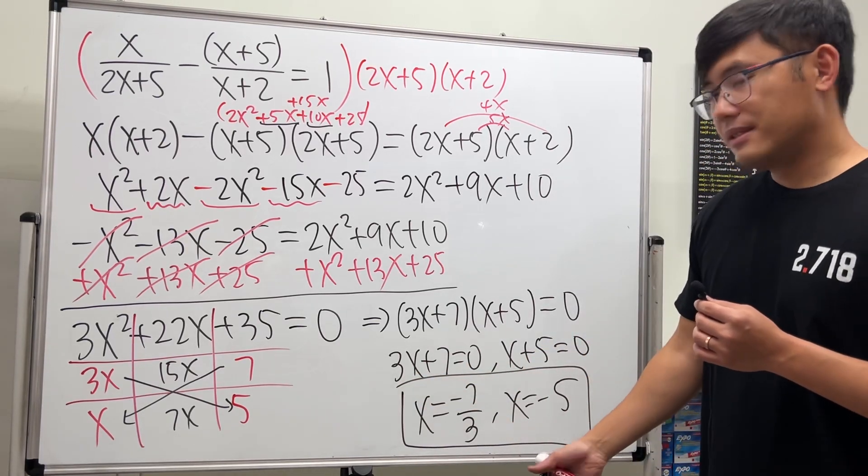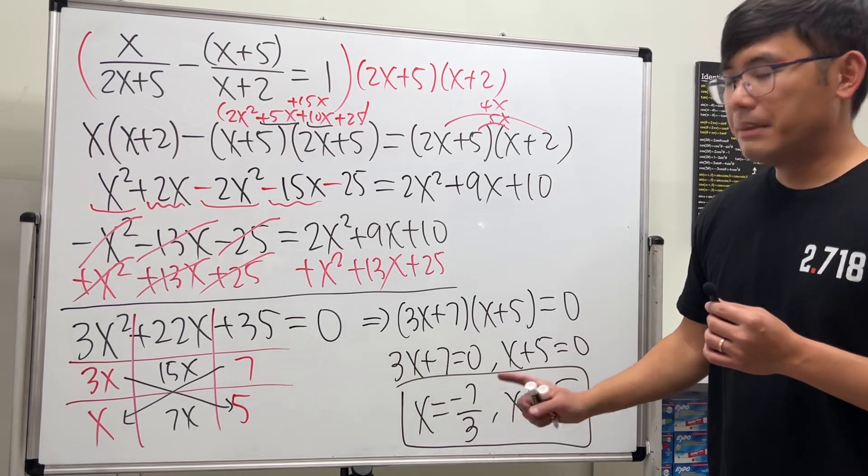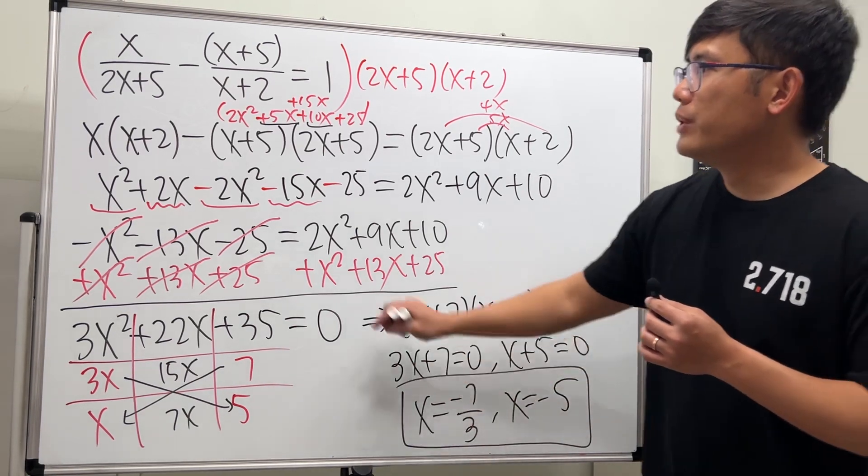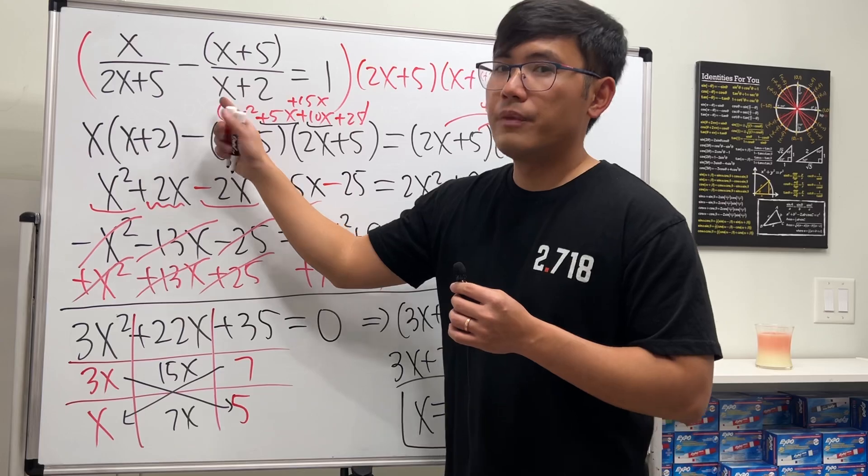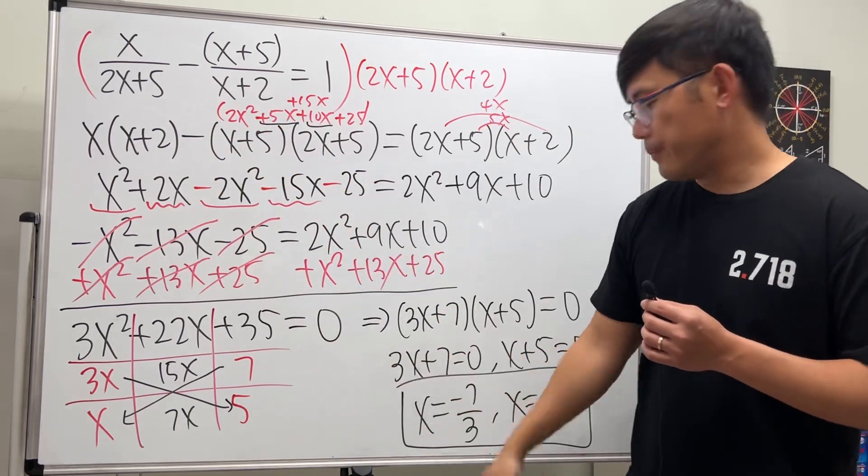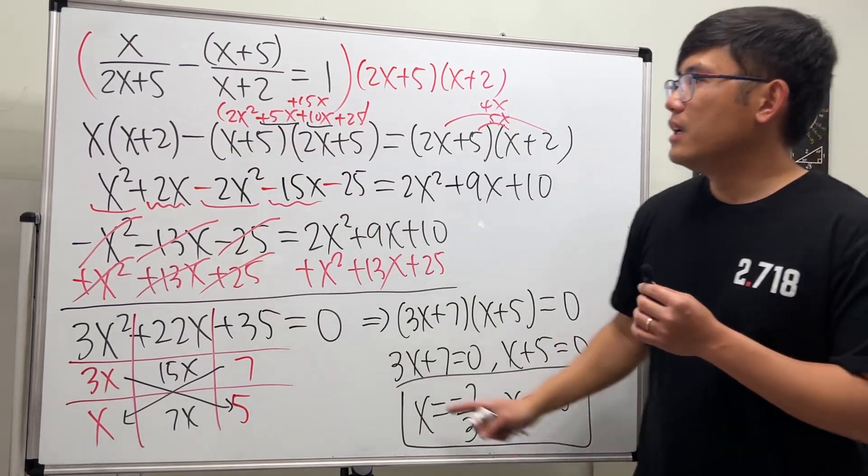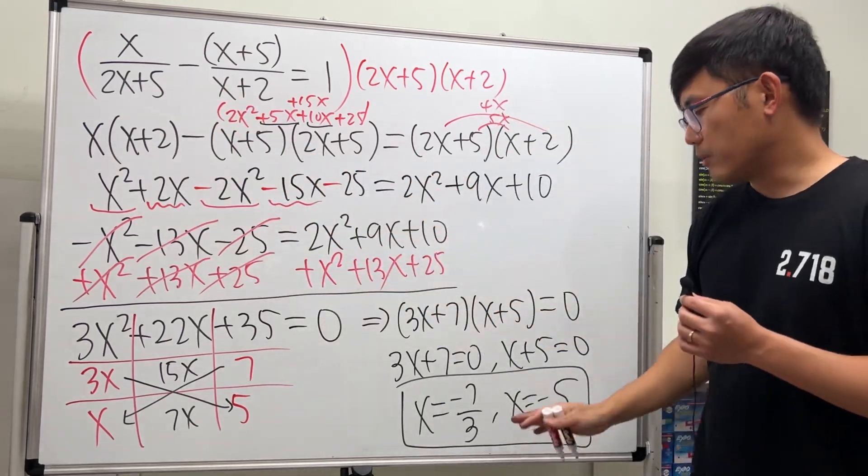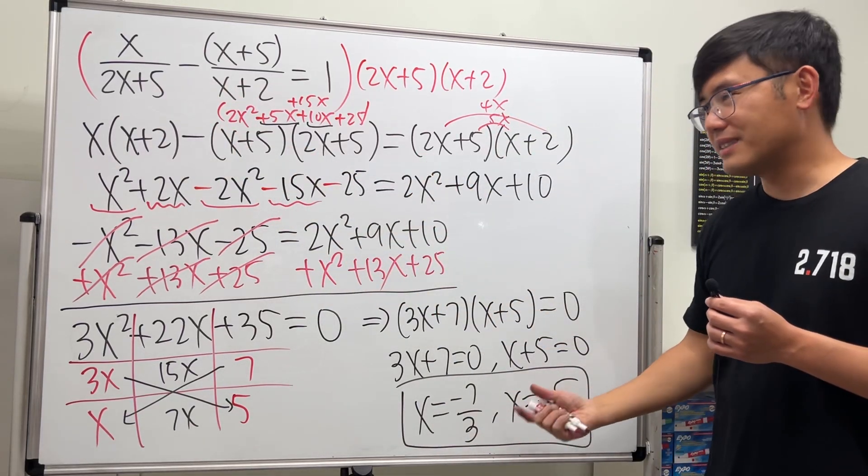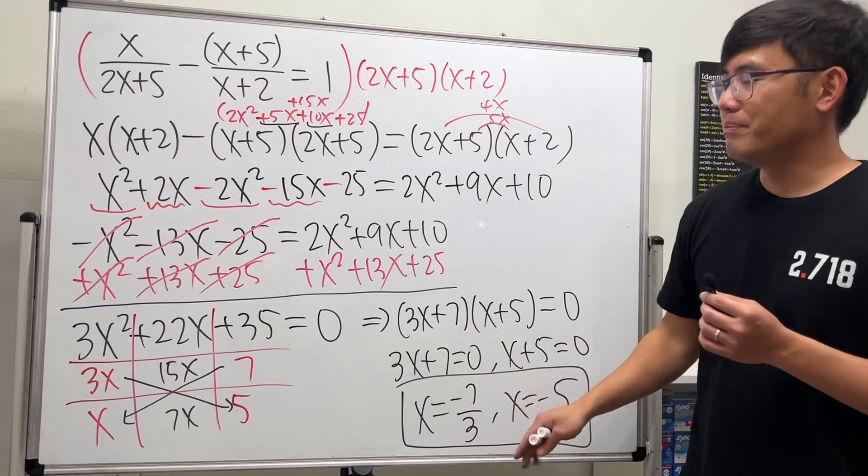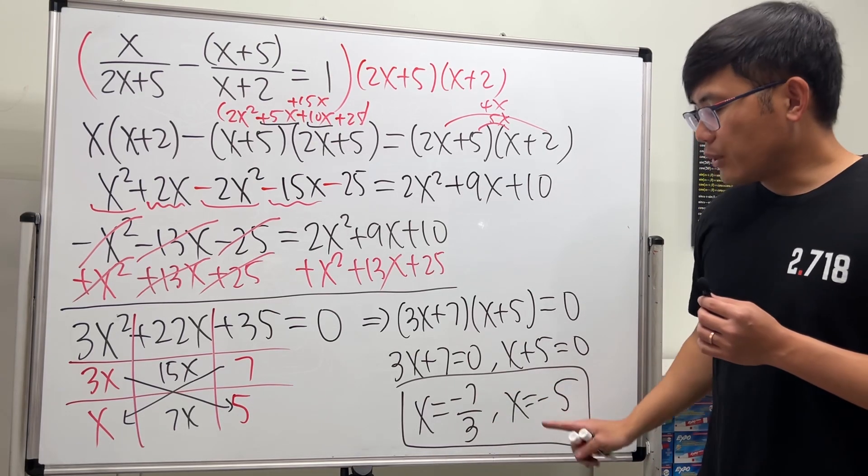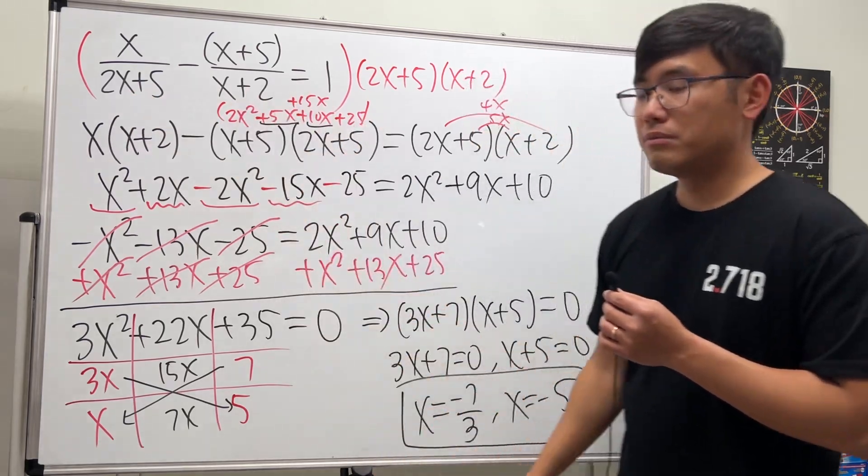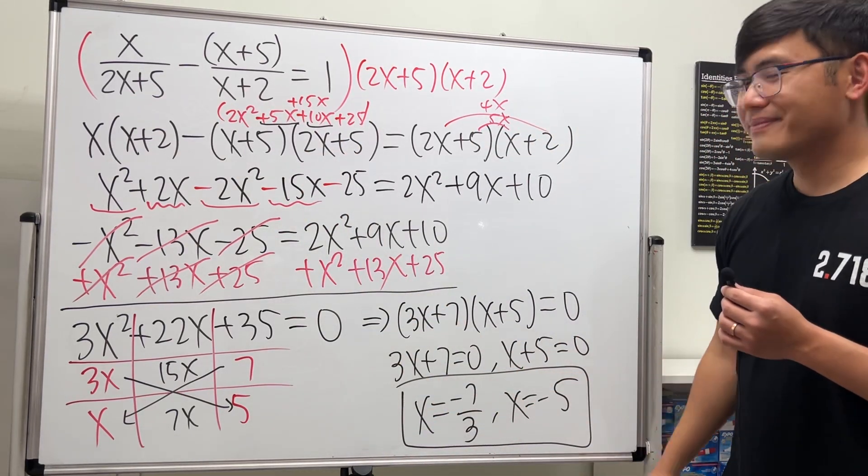I boxed the answer—in fact, they are both correct because this right here, negative 7 over 3, if you put it into the denominators here and here, it wouldn't cause them to be zero. Likewise, negative 5, if you put that into x here and the x here, the denominators will not be zero, so they are legitimate. So that's the quick spot check on the bottom: make sure that the x values that we have here don't make the bottom equal zero. And yeah, that's it. I'll see you next time.